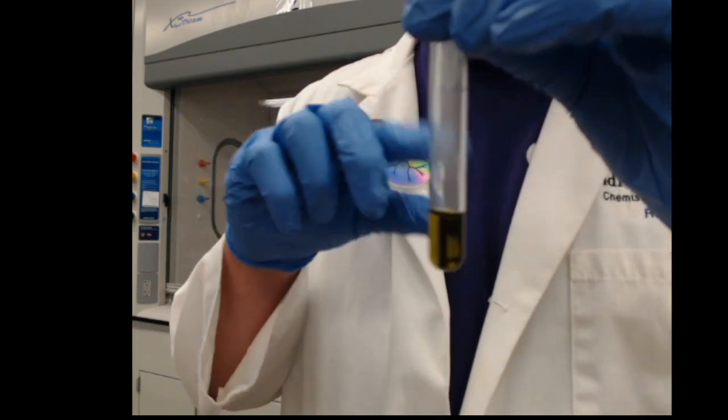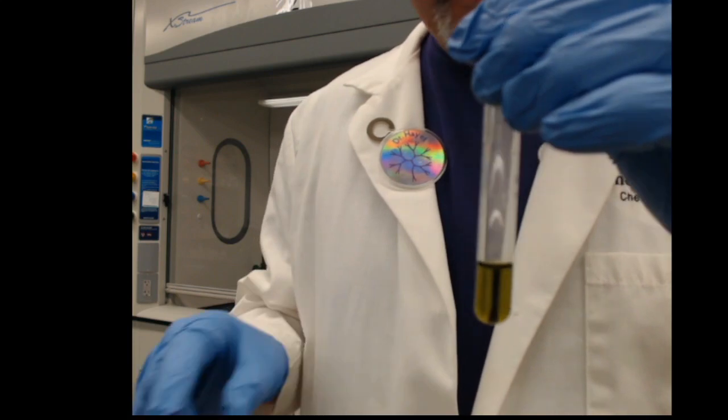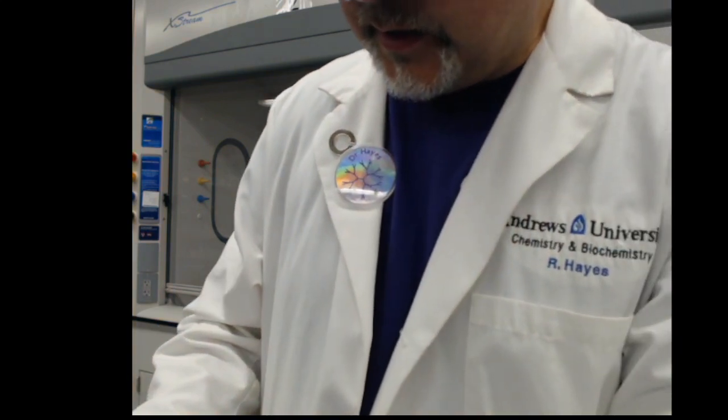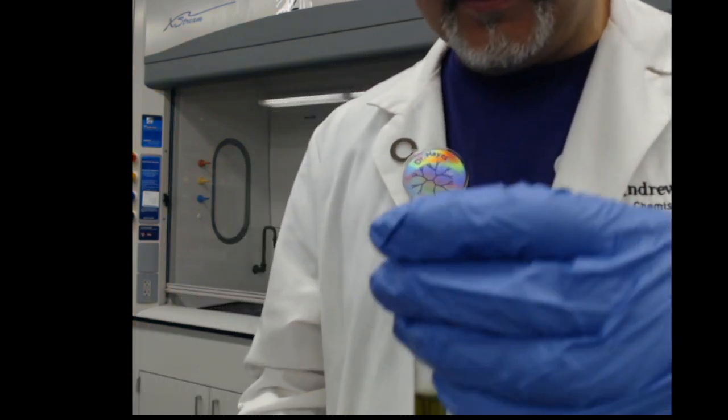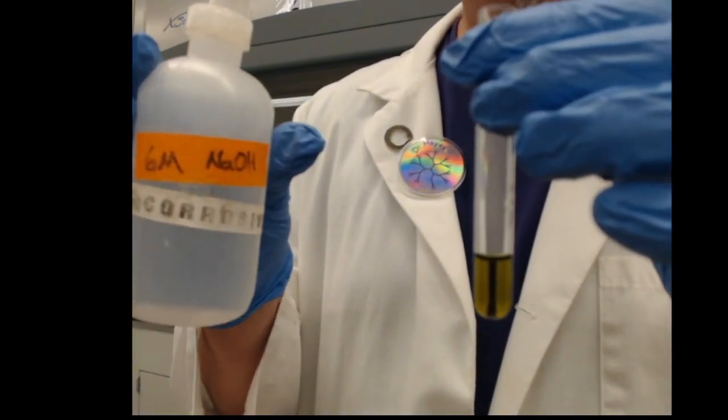So yellow and purple are the two colors here. So that original one was the purple with the water, the violet with the water. Now I'm going to add six molar sodium hydroxide.